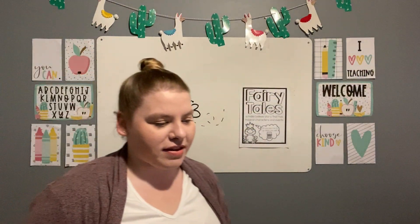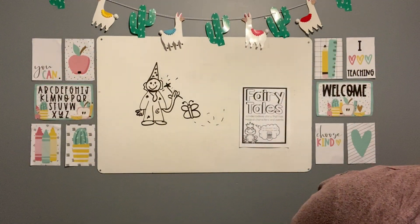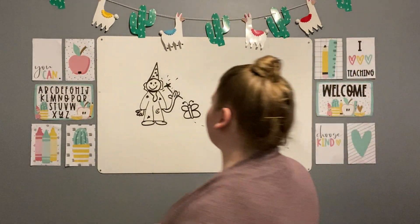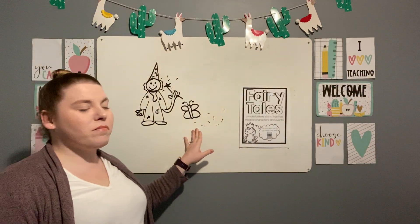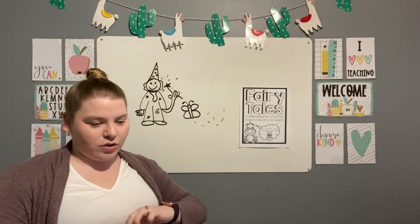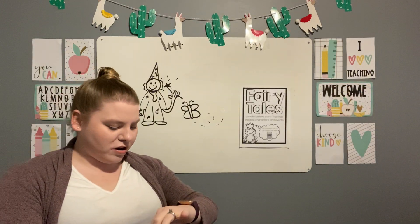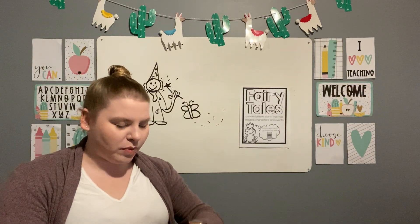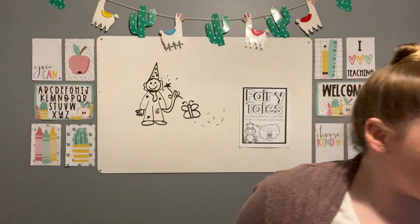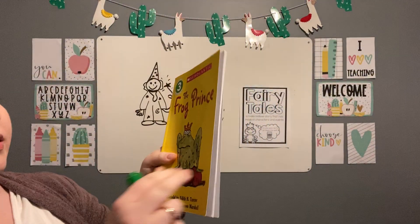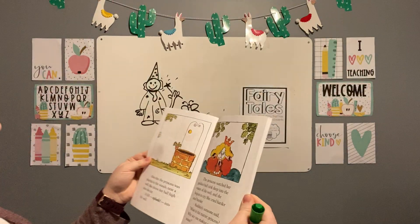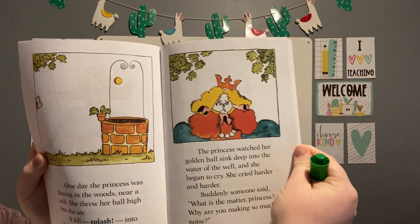So we are making up our own story. In Mrs. Walden's story, there is a wizard and his pet butterfly. Today we are moving on in our story and we are going to be talking about the setting of the story. So what is the setting of the story? Let's think about The Frog Prince — what was the setting?